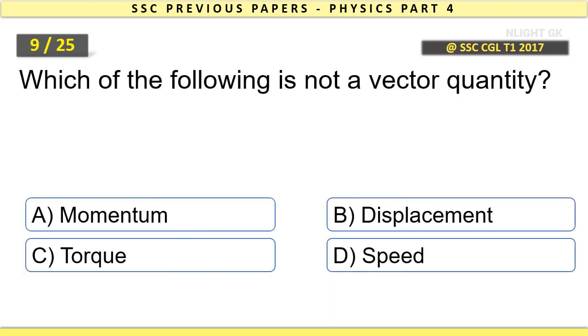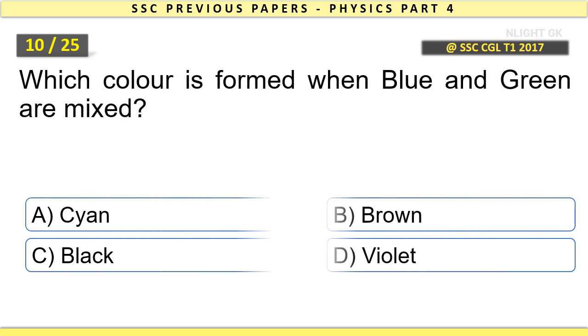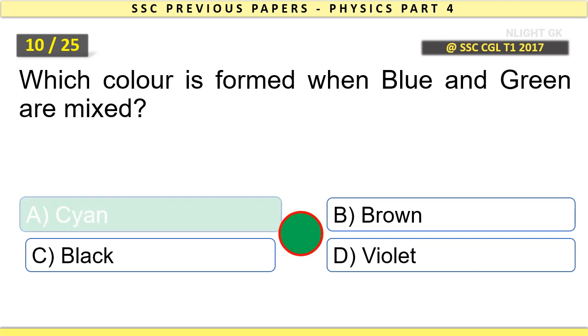Which of the following is not a vector quantity? Speed. Which color is formed when blue and green are mixed? Cyan.